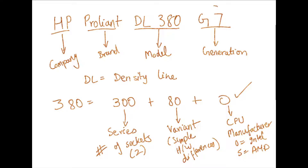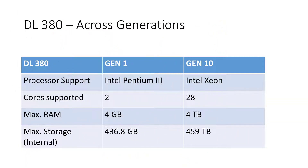The last part of the server name is the generation. Like human beings, server models also tend to evolve over time, and an improvement within the same server model is called a generation. For example, the HP Proliant DL380 is currently in its 10th generation. The first generation came out in the 1990s with two Intel Pentium processors and could support only up to 4 GB of RAM. The 10th generation, however, can support up to 4 terabytes of RAM and has Intel Xeon processors that can go up to 28 cores. So when buying a server, make sure to look at the generation — otherwise you might end up getting a very old one.